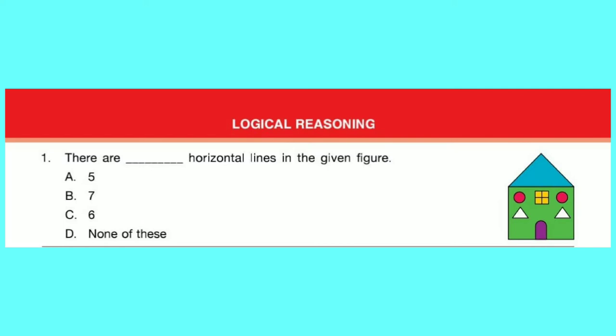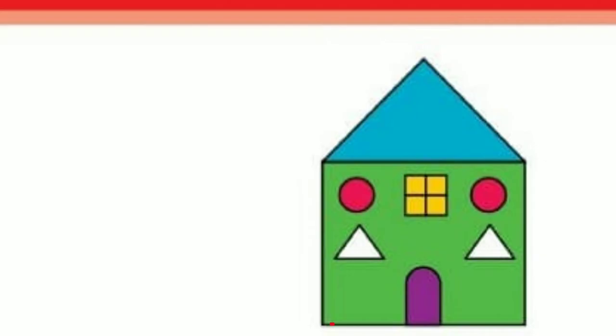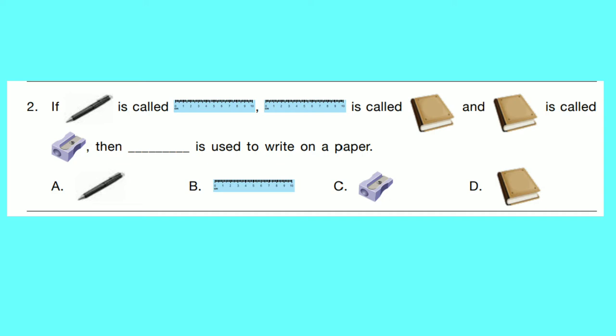Logical Reasoning. Question number 1: There are dash horizontal lines in the given figure. These are 7 horizontal lines. Correct option is B: 7.